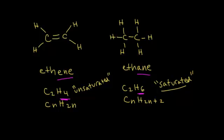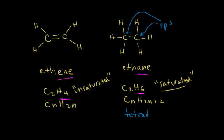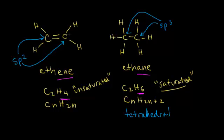Let's look at the hybridization states of the carbon atoms. In ethane, there are only single bonds around each carbon, so each must be sp3 hybridized, exhibiting tetrahedral geometry. For the carbons in ethene on the left, each carbon has a double bond, so they are sp2 hybridized. Because sp2 hybridized carbons are trigonal planar, the ethene molecule on the left is flat, while the ethane molecule on the right is tetrahedral.